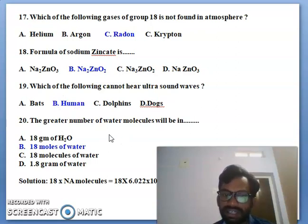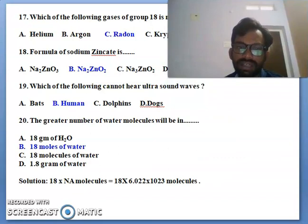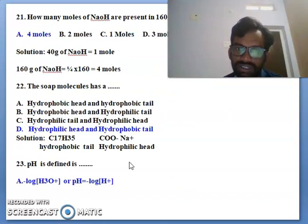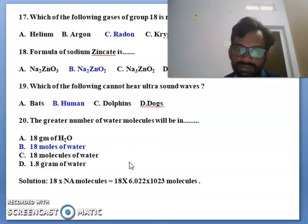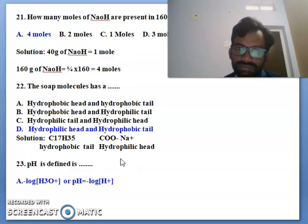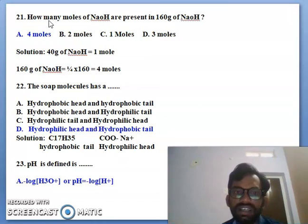And 20th bit is the greater number of water molecules will be in. So greater number of water molecules will be 18 moles of water. You can see that the example 18 into Na means Avogadro number of water molecules. So 18 into 6.022 into 10 to the power of 23 moles. How many moles of sodium hydroxide are present in 160 grams of sodium hydroxide? You can see here 40 grams of sodium hydroxide, that is 1 mole. So 160 grams of sodium hydroxide, 1 by 4 into 16, 4 moles.